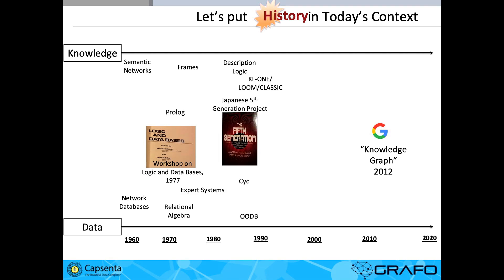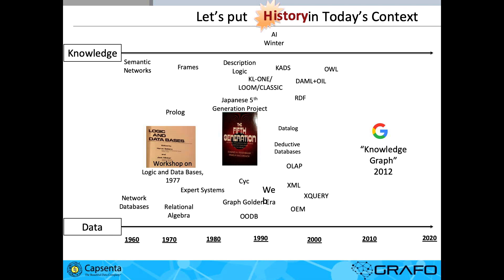Raise your hand if you've ever heard about the Japanese fifth generation project. Go look at the Wikipedia page — you're going to see that we're kind of reinventing the wheel in the new context and new systems that we have today. If you're interested, take a look at knowledgegraph.today — we're organizing a tutorial on the history of knowledge graphs that goes back 50 years.